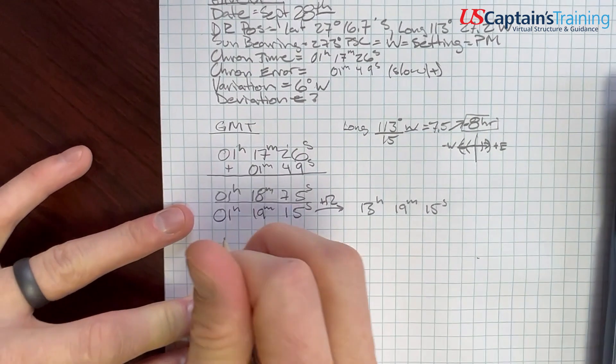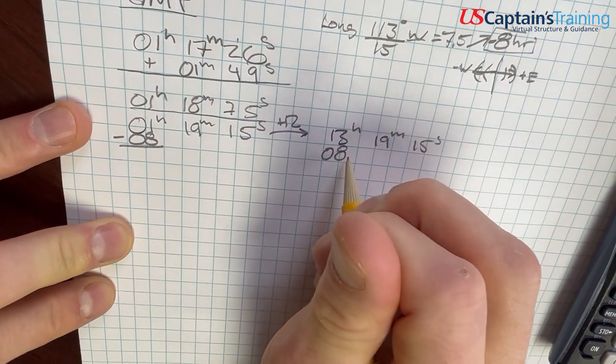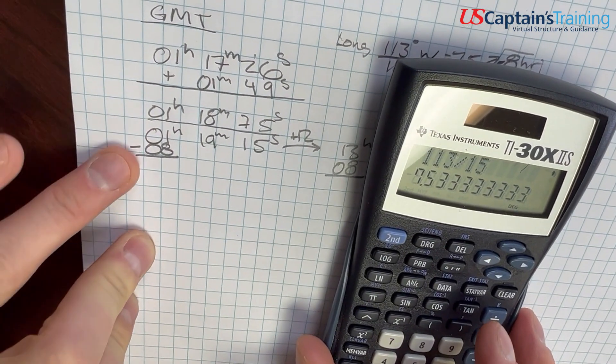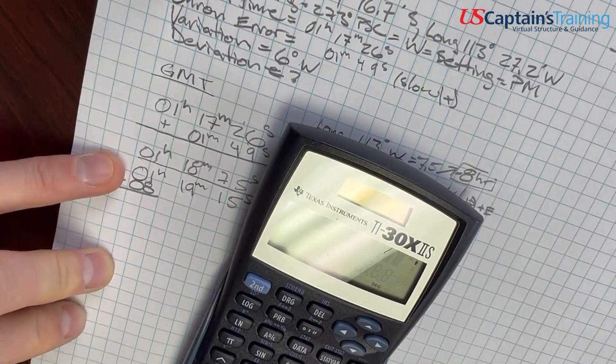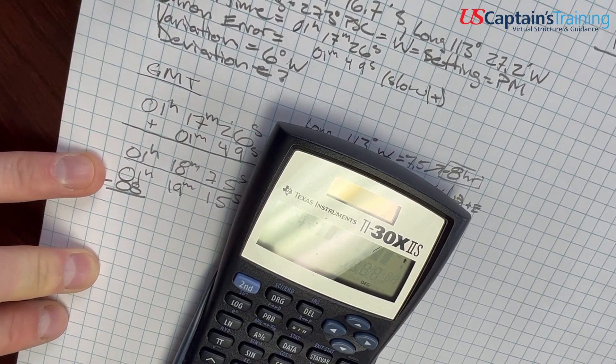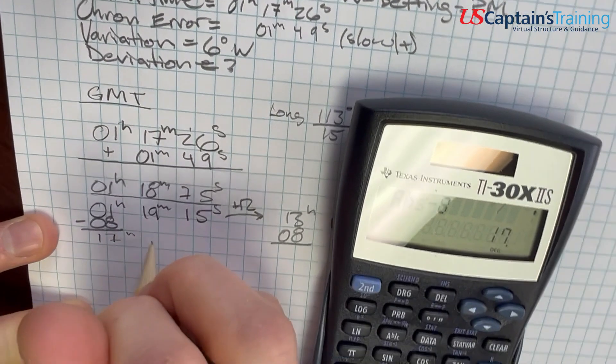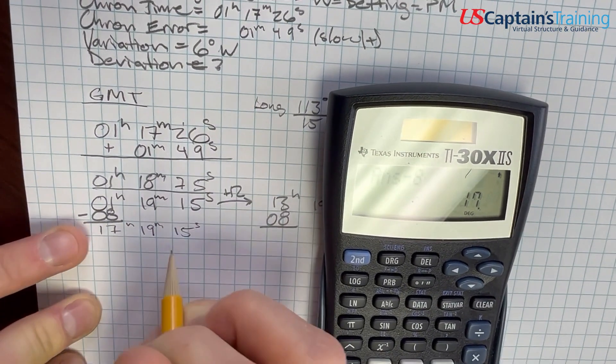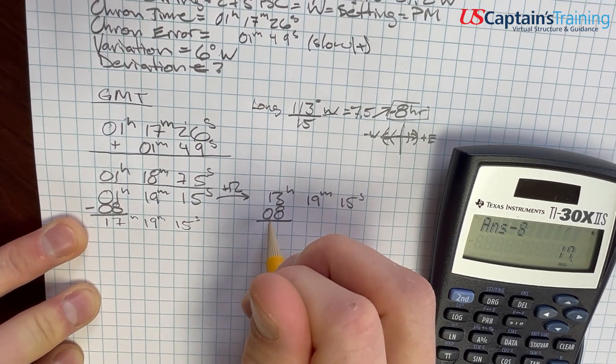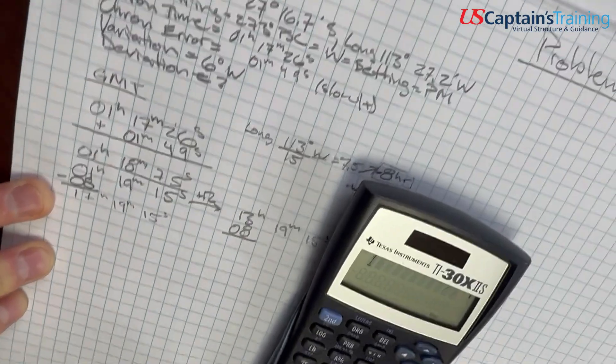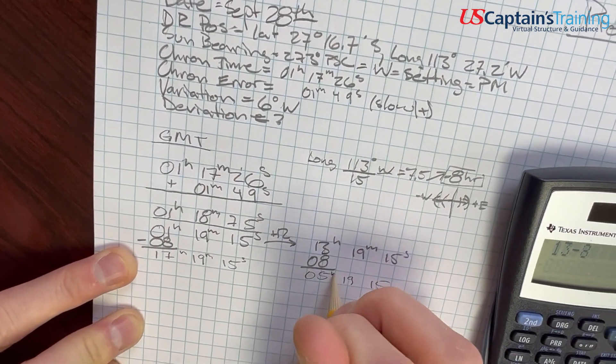So we say minus 8 hours. We'll subtract 8 hours from both times. 1 minus 8 - can't do that, but we can add 24 to 1. So 24 plus 1 minus 8 equals 17. That's 17h 19m 15s, approximate LMT. And 13 minus 8 equals 5, so 5h 19m 15s.